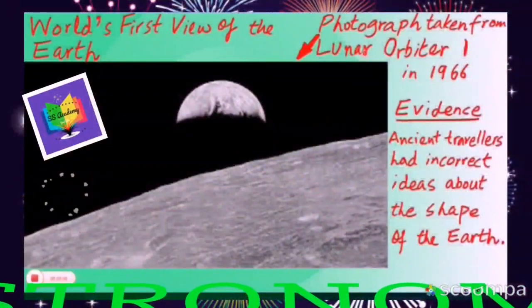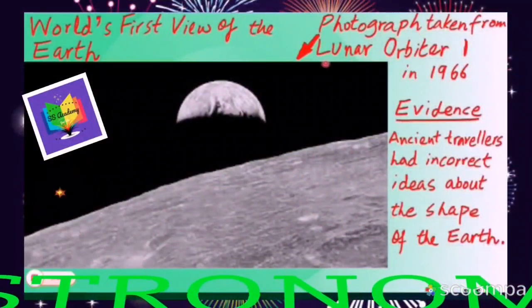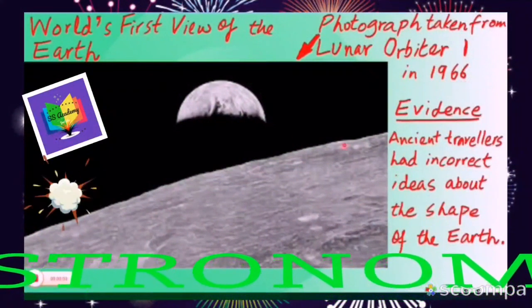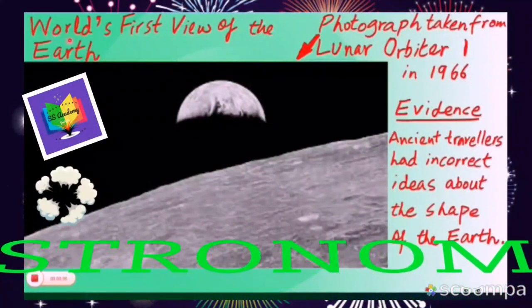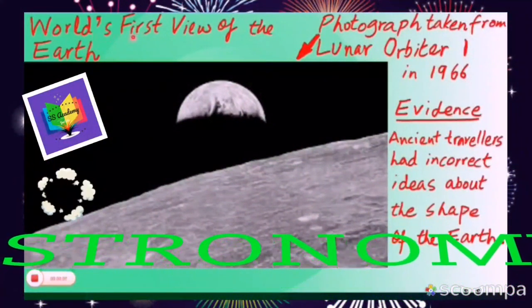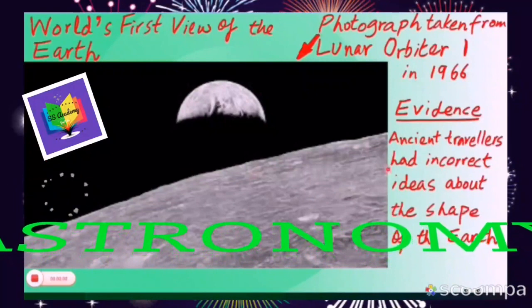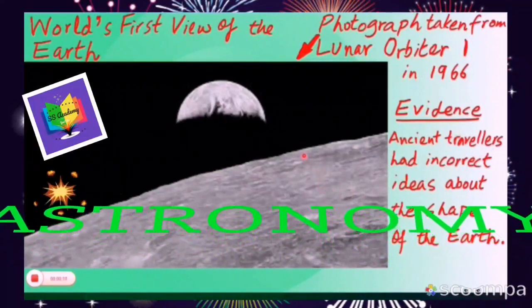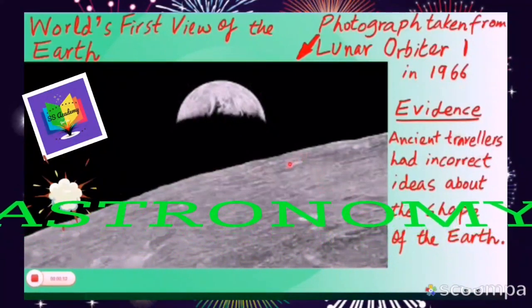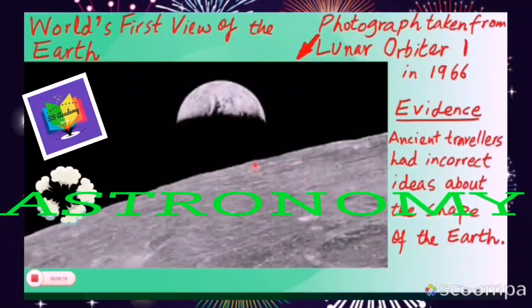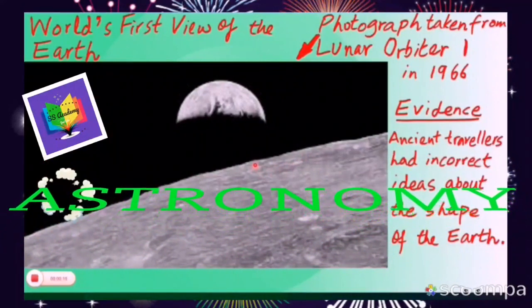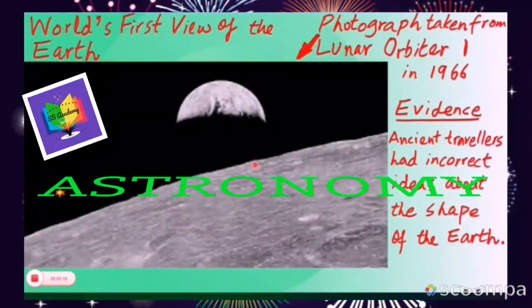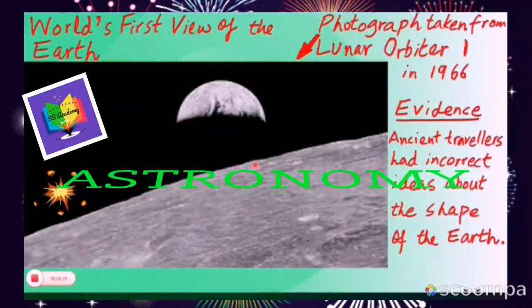This photograph taken from Lunar Orbiter 1 in 1966 is the world's first view of the earth. This photograph clearly shows that the ancient travelers had incorrect ideas about the shape of the earth — that it is flat and if they travel too far, they would fall over the edge.